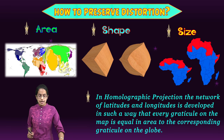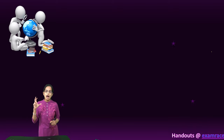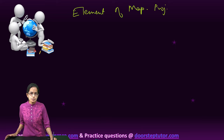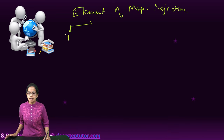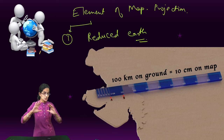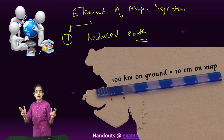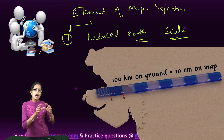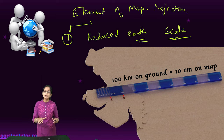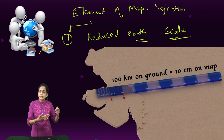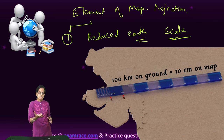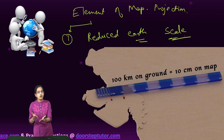The elements of map projection are basically four. The first element is the reduced earth. Reduced earth means the actual thing on the ground is reduced through a scale. That scale represents how many kilometers on the ground would be equivalent to how many centimeters on the sheet of paper. It could be kilometers/centimeters or miles/inches. The scale explains the real distance on the ground versus the distance on the sheet of paper.